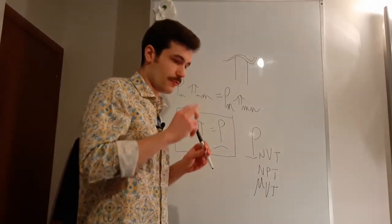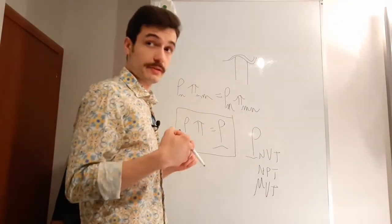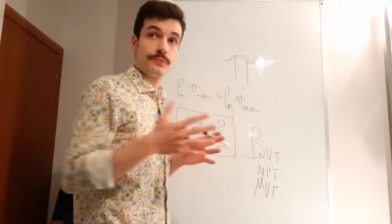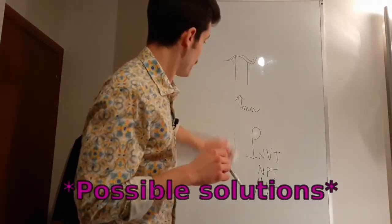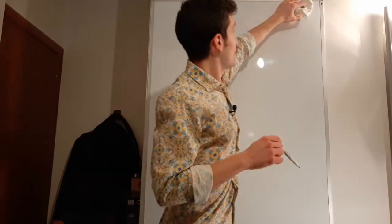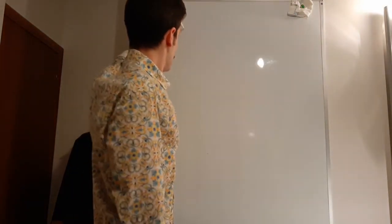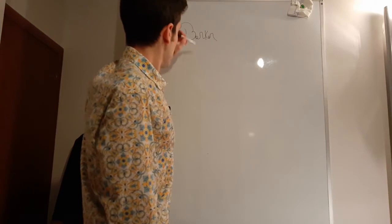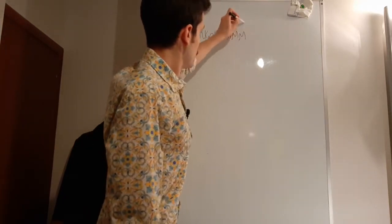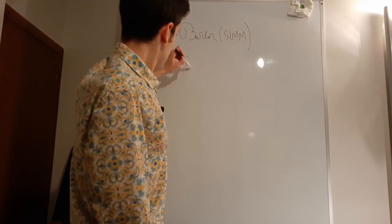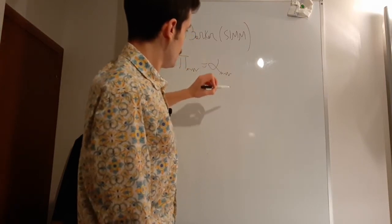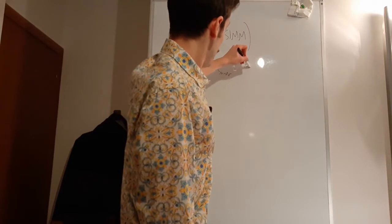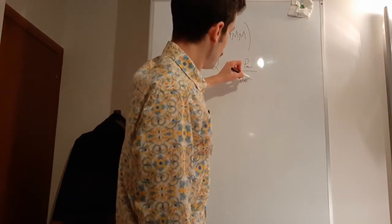We know that the probability of going in one direction must be equivalent to the probability to go in the other one, and that's actually all we need to know. There have been many suggestions of how pi could be defined. For example, there is the one by Barker that is symmetric, where pi_{nm} — from n to m — is equal to alpha_{nm} times rho_m, the arrival state, divided by rho_n plus rho_m.